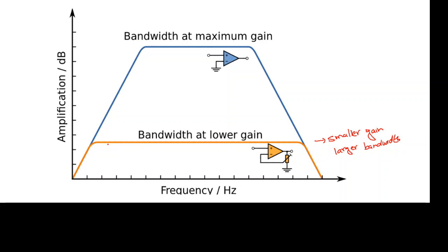At lower gain the bandwidth is greater, which means the frequency range over which the output of the operational amplifier is an exact duplicate of the input is very high. The range of frequencies for which the output will not be a distorted signal is very high, but the gain is small.